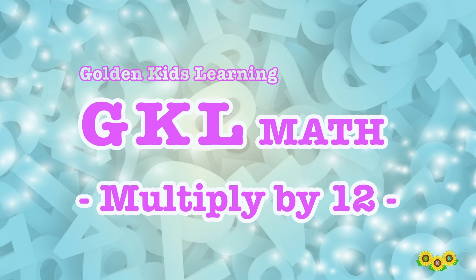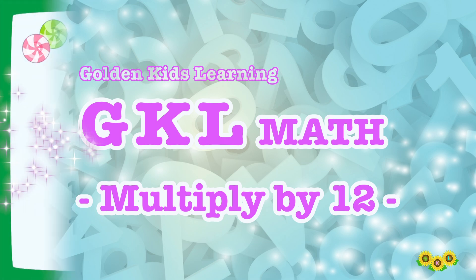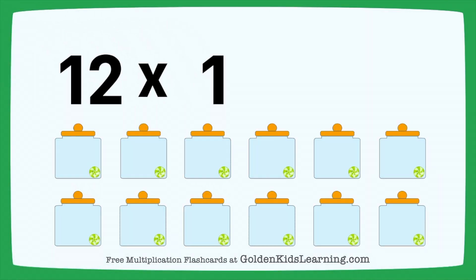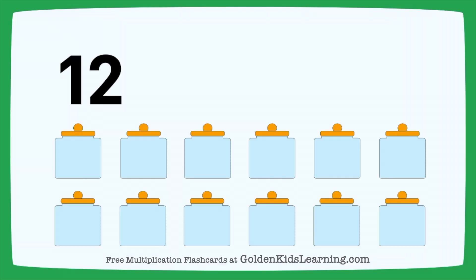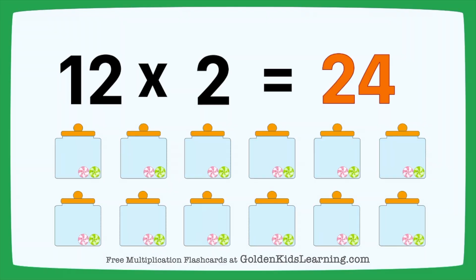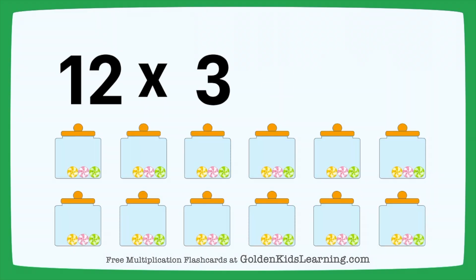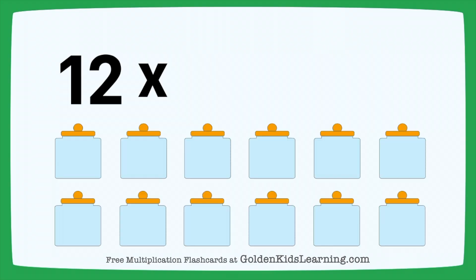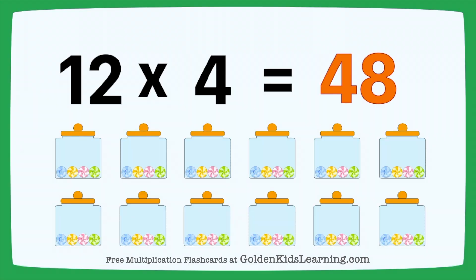GKL Math: Multiply by 12. 12 times 1 equals 12. 12 times 2 equals 24. 12 times 3 equals 36. 12 times 4 equals 48.